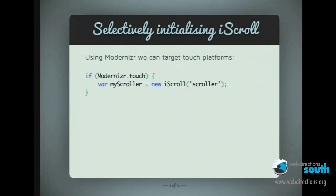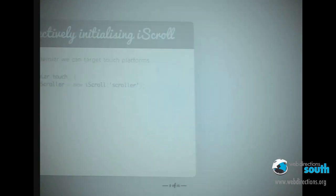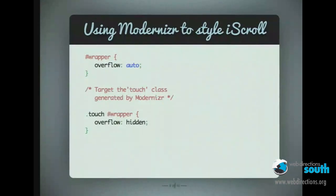So how do we target touch devices? A good way is to use Modernizr. Modernizr has a touch test that you can use, and if it's true, we can initialize iScroll, making sure it doesn't run on desktop. You can also use Modernizr's touch class that it adds to the HTML element so you can style it differently if you want. If you want to make sure that overflow auto is on desktop while it's hidden on mobile, it's very easy to do.